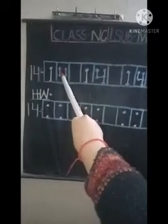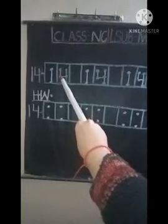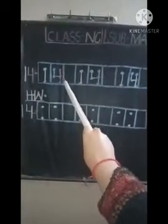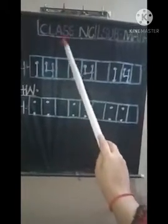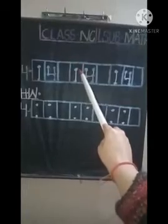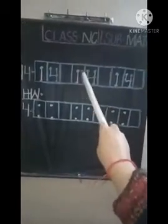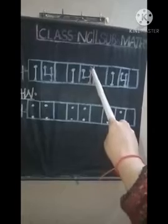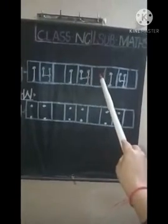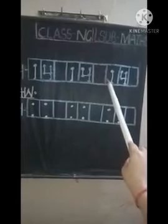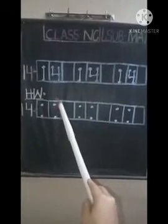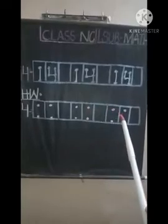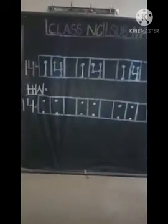One box leave, second column. Make a number one and again make number four. One box leave for 14. You have to practice in this column in your math copy.